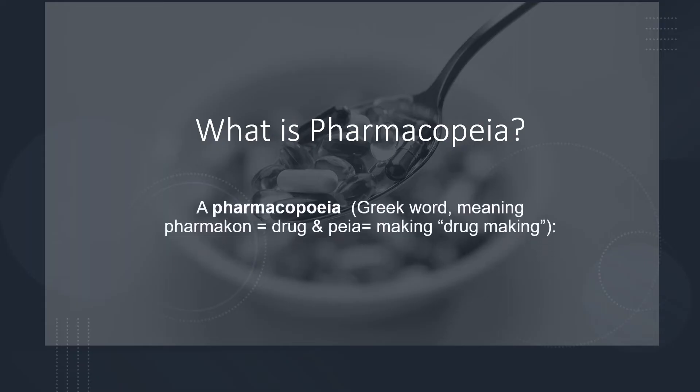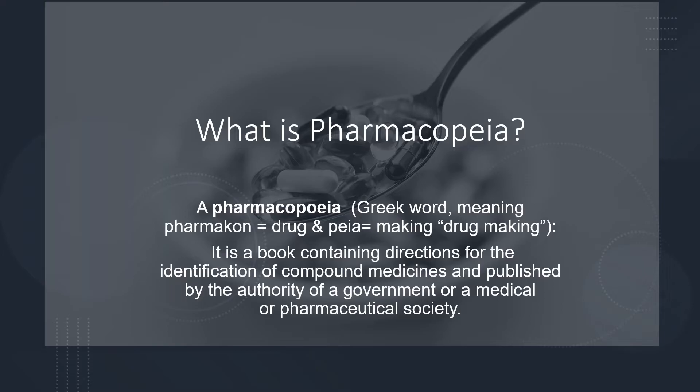Pharmacopoeia is a Greek word composed of two words: 'pharmacon' and 'pia'. Pharmacon means drug and pia means making, so pharmacopoeia means drug making. Pharmacopoeia is a book containing directions for the identification of compound medicines, published by the authority of a government or a medical or pharmaceutical society.